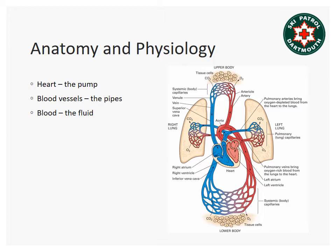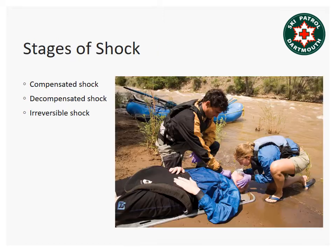Here again is the representation of the circulatory system. You're still responsible for knowing the pattern of flow of a blood cell as it enters the right atrium, right ventricle, pulmonary artery, pulmonary vein, left atrium, left ventricle, aorta, arteries, arterioles, capillaries, venules, veins, vena cava, and back into the right atrium.